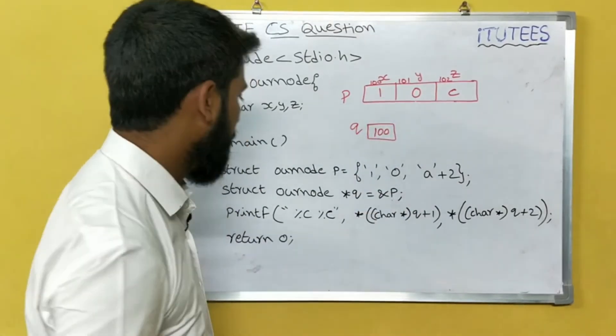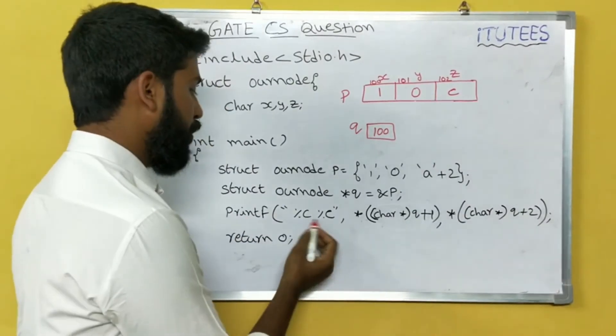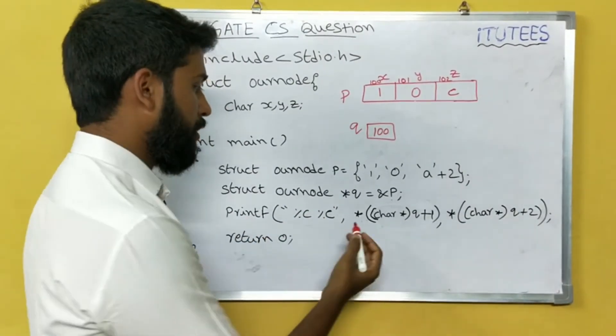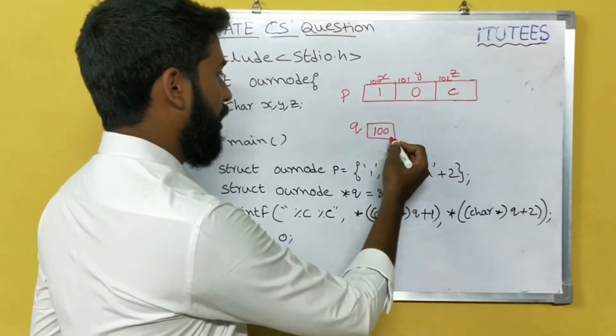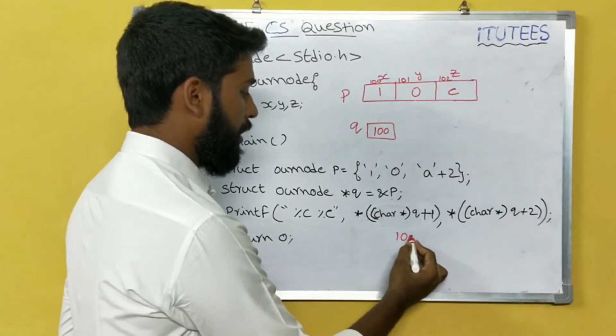In next line, now we are going to print two characters. So one is *(q+1). What is the q value? 100.